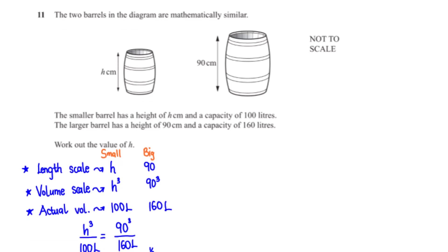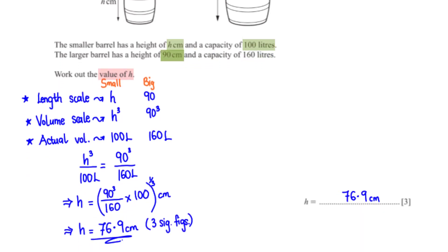The two barrels in the diagram are mathematically similar. The smaller barrel has height 8 centimeters and capacity 100 liters; the larger has height 90 centimeters and capacity 160 liters. Work out the value of H. We set up the ratio H to 90 centimeters, then cube the linear scale factor. This gives H cubed to 90 cubed equals 100 to 160. Solving, H equals the cube root of (90 cubed over 160 times 100), giving H equals 76.9 centimeters.